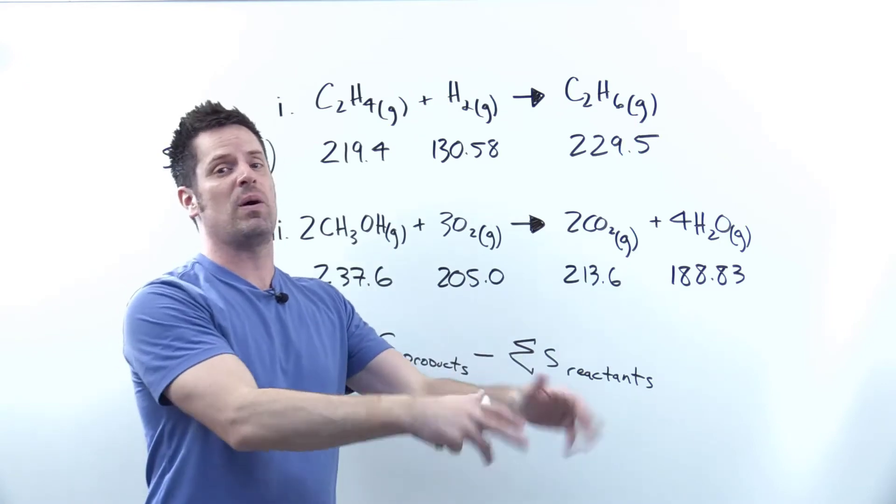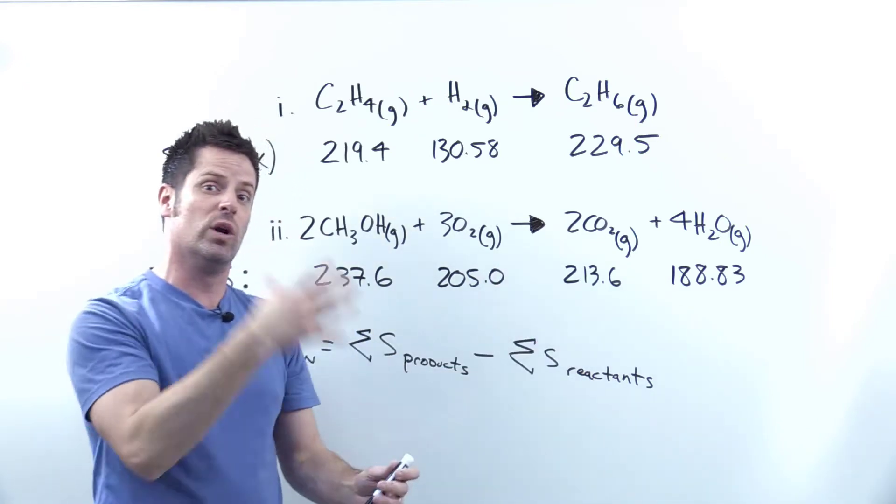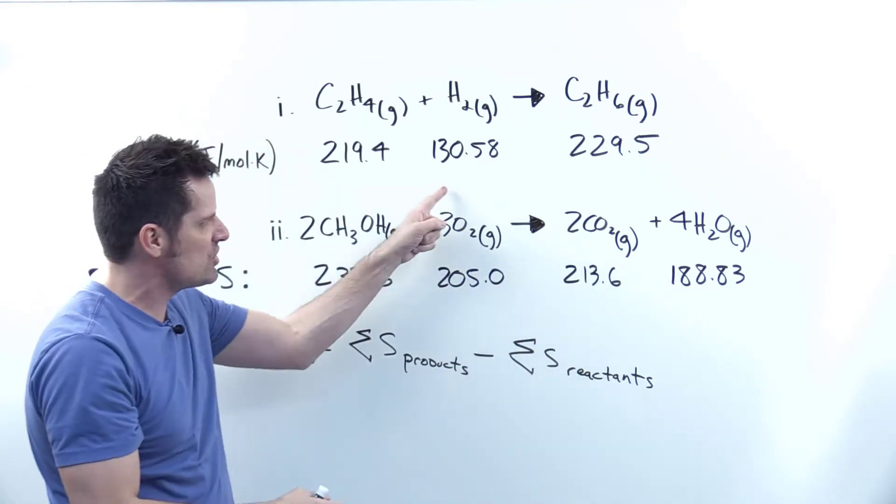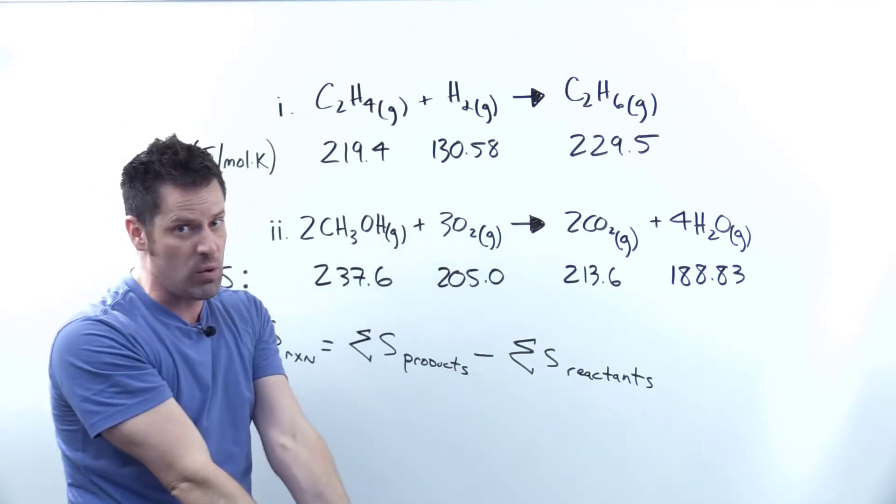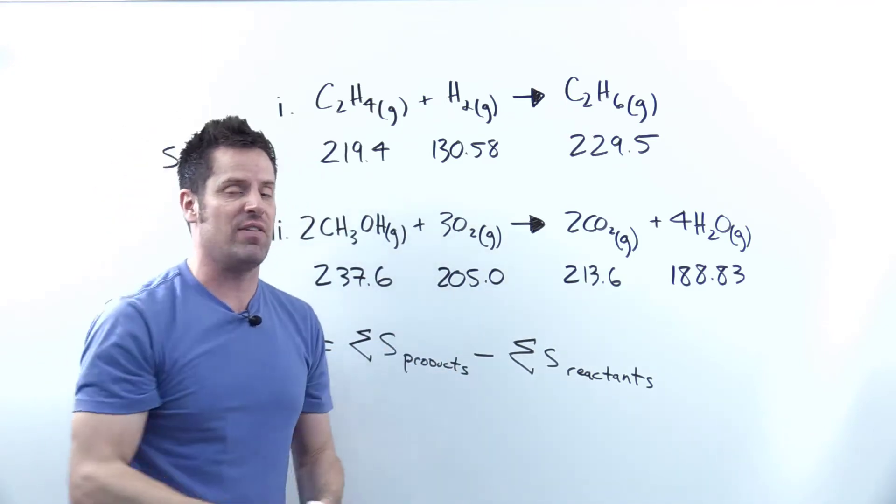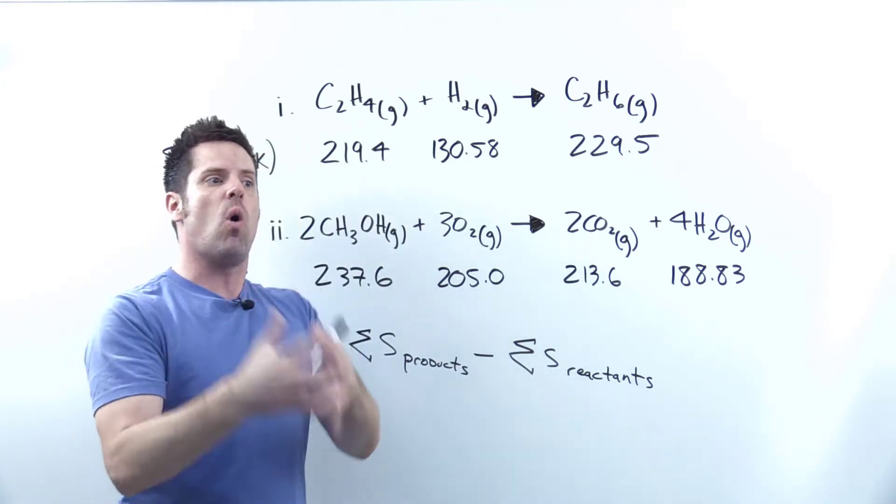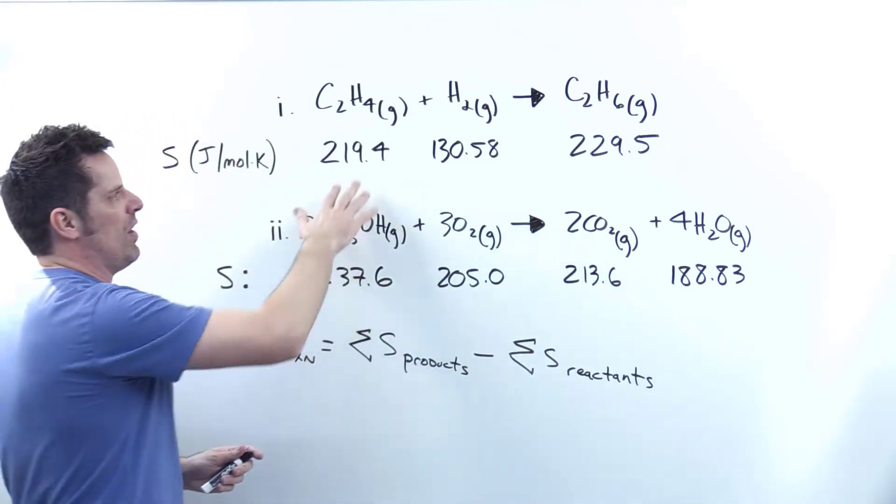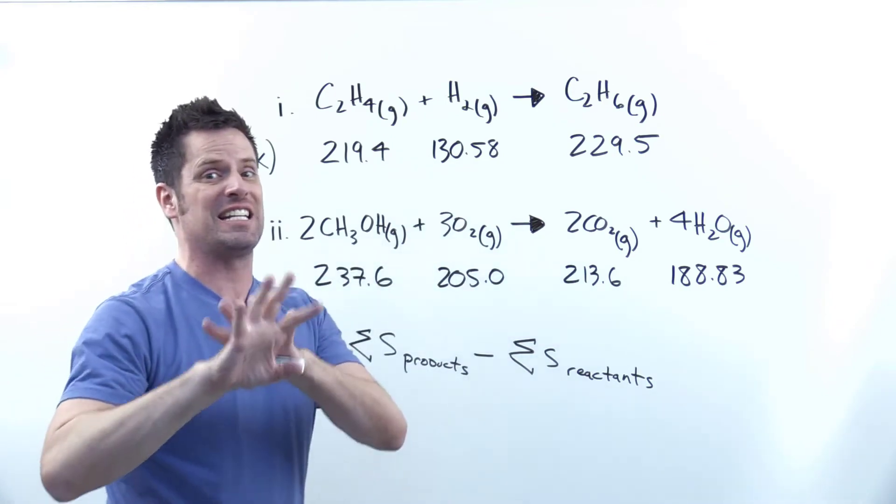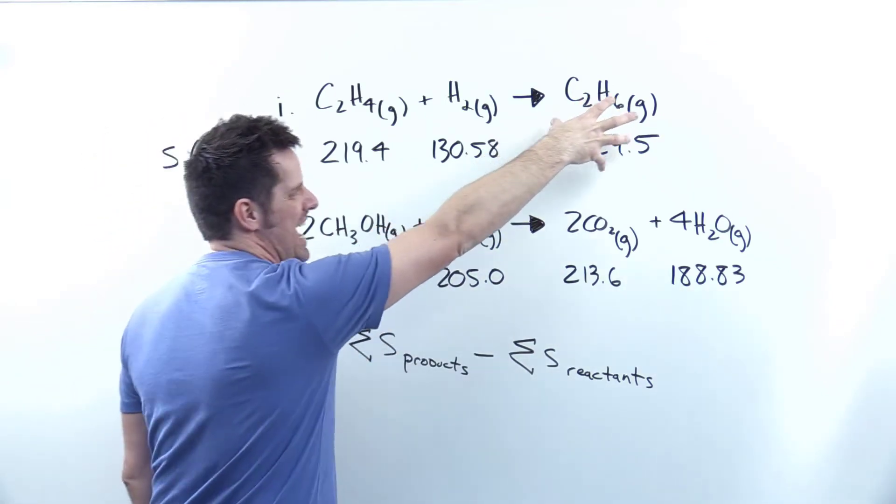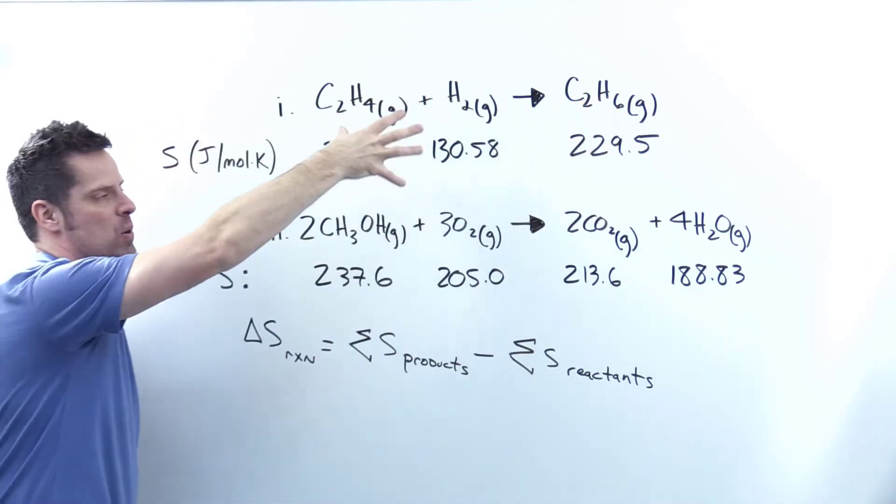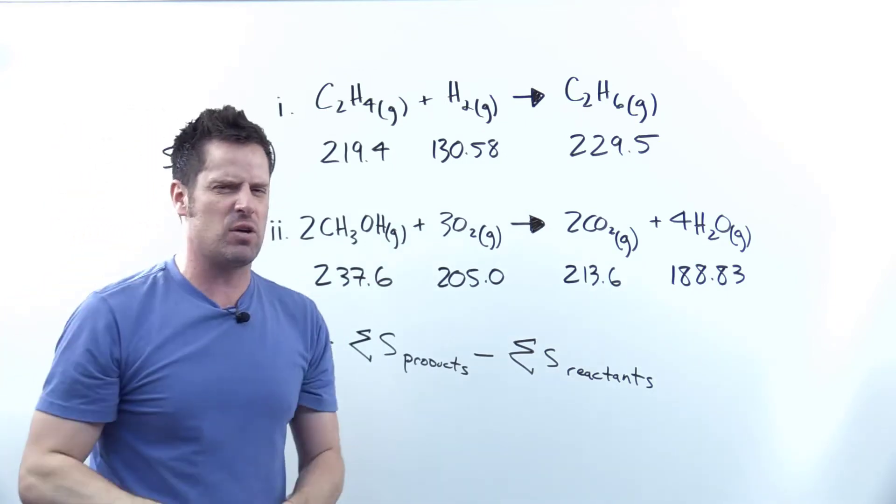You can get S all the way down to zero but can't ever go negative. However, delta S can be negative, or positive, or zero, depending on what the values are here. So delta S is just the difference between the S values of products and those of reactants.